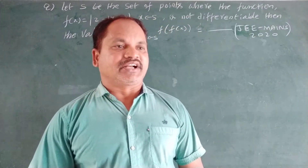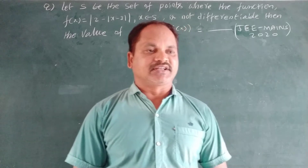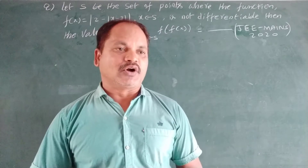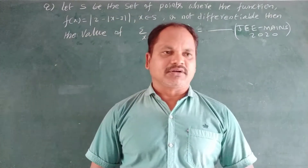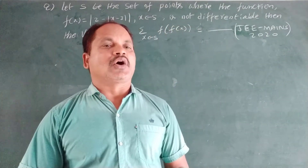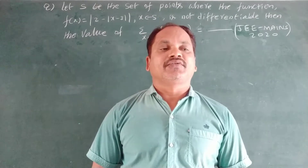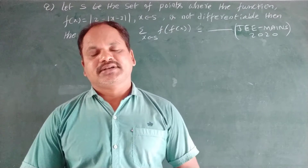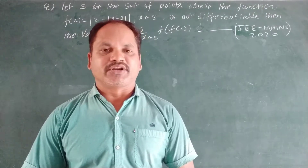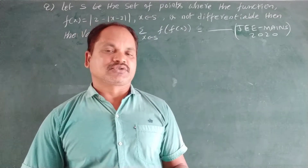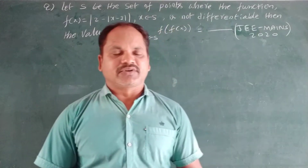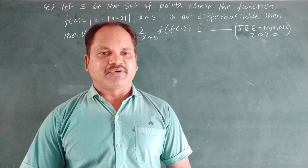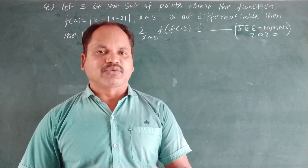Okay, dear students, the question: let S be the set of points where the function f(x) = |2 - |x - 3|| for x belonging to real numbers is not differentiable. Then find the value of Σ(x∈S) f(f(x)). This is a question from JEE Mains 2020 integer type questions. Questions 1 to 20 are straight objective and 21 to 25 are integer type. This is an integer type question we have to solve.